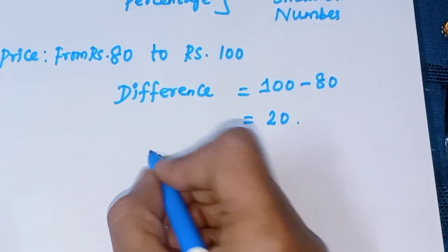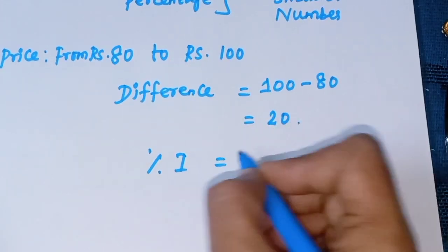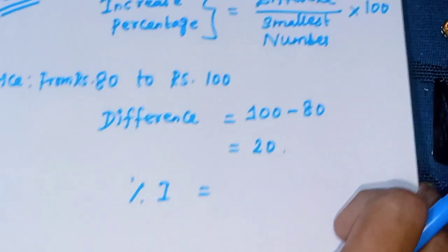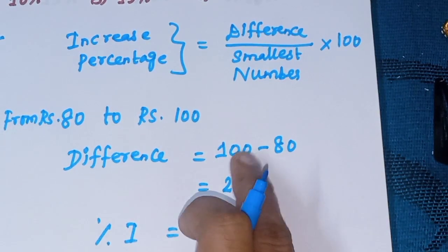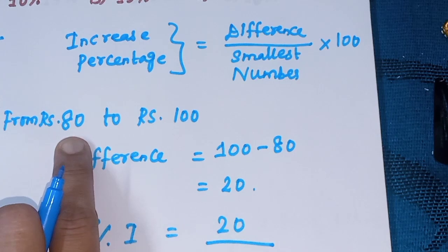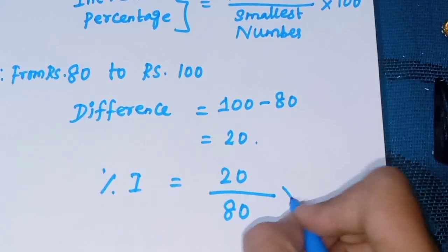Increase percentage equals difference, which is 20, divided by smallest number, which is 80. So 20 divided by 80 into 100.